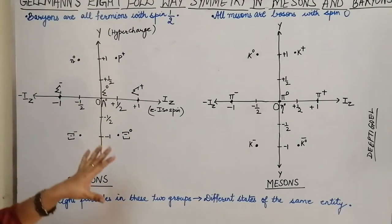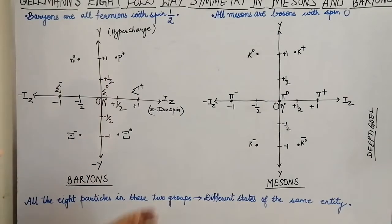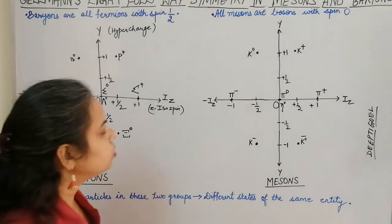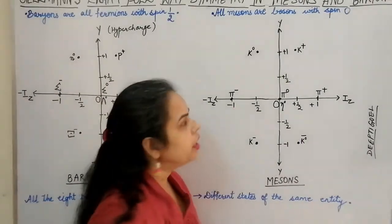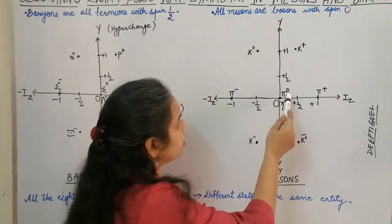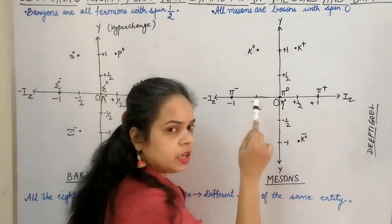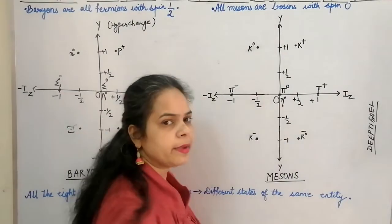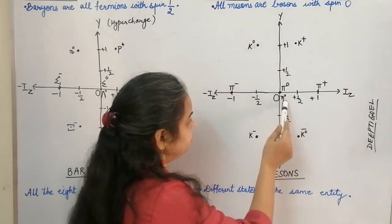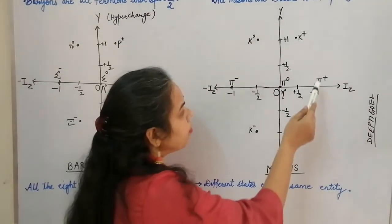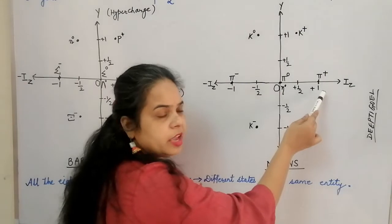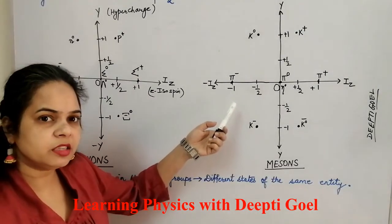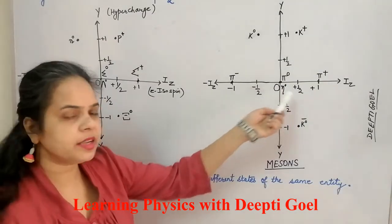This is the representation in which the eight baryon particles are placed in this symmetry diagram. Now for the meson family — depicted the same way as the baryons — on the x-axis we have Iz and on the y-axis we have hypercharge. We have three pions: pi positive, pi naught, and pi negative. They are not baryons and not strange particles, so Iz value is 0 and hypercharge is also 0. Pi naught and eta naught are at the zero value of both hypercharge and Iz, while pi positive is at Iz = +1 with hypercharge 0.